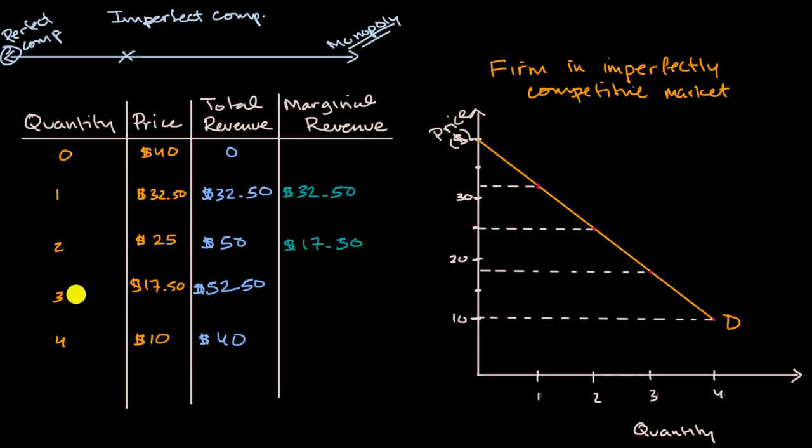When we go from two to three units, our revenue only goes up by $2.50. And so that's going to be our marginal revenue. And then something very interesting happens.